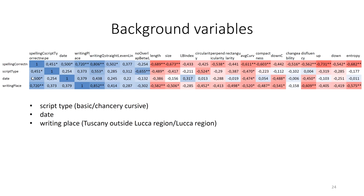The statistically significant moderate correlation between the date and spelling correctness is positive, meaning that the later the date, the better the spelling. And the statistically significant positive correlation between the writing place and spelling correctness is even stronger, over 0.7. It means that documents from the Lucca region have better spelling than documents from elsewhere in Tuscany. This is clearly related to the well-known consolidation and unification of documentary production in the city of Lucca, the capital of Tuscany, in the last decades of the 8th century.